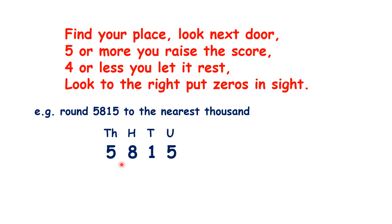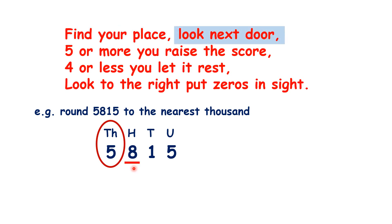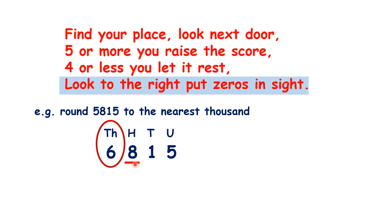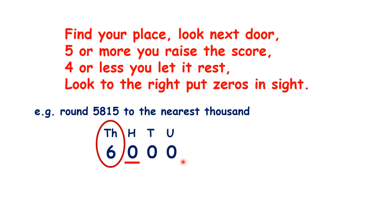Let's start by rounding to the nearest thousand. So we find the place, look next door, raise the score, and then look to the right, put zeros in sight. So to the nearest thousand, 5,815 rounds to 6,000.